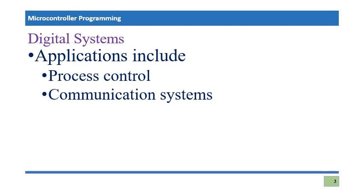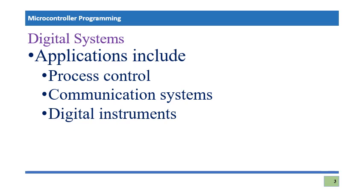Communication systems are another application — whenever you communicate with another party, whether in your city, your country, or another country in the world, you are dealing with a communication system application. Digital instruments are also a key category: there are highly accurate instruments that give readings in digital form, for example blood pressure measurement instrumentation and weight measurement instruments.